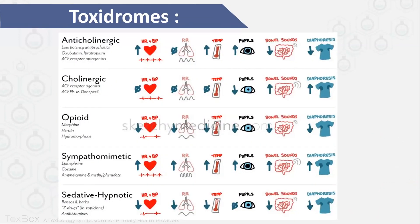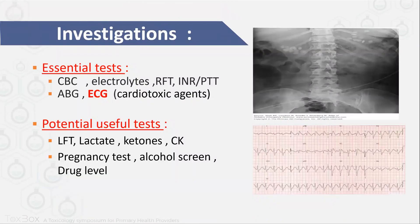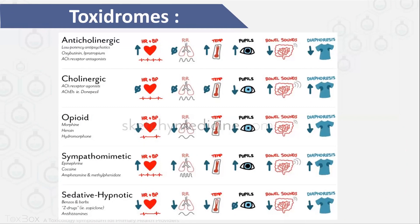All of this will lead you to the toxidromes — a collection of signs and symptoms that guide you toward the toxicity. What you need to notice is that all toxidromes rely on the initial vital signs and physical exam: heart rate, respiratory rate, temperature, pupils, bowel sounds, and diaphoresis. This leads you to specific toxidromes, and you can manage accordingly. Even without history, you can get a great deal from the physical examination.